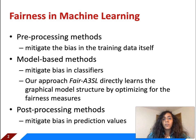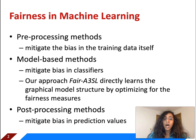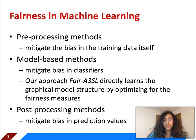There are three broad categories in which fairness algorithms fall into. The first category belongs to pre-processing methods, which mitigate the bias in the training data itself. In the second category there are model-based methods, which mitigate bias in the classifiers. Our approach FAIR A3SO directly learns the graphical model structure by optimizing for the fairness measures, and hence it falls under model-based methods. There are also post-processing methods which mitigate bias after the predictions have been made.